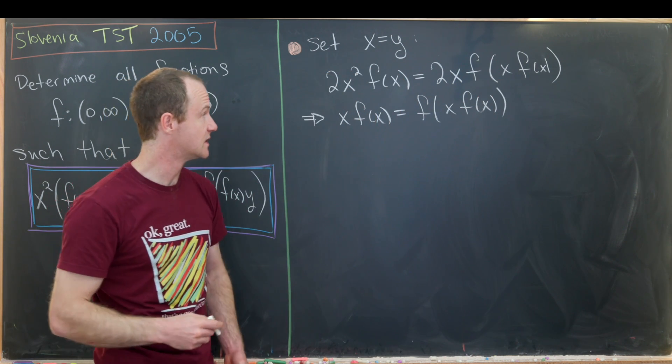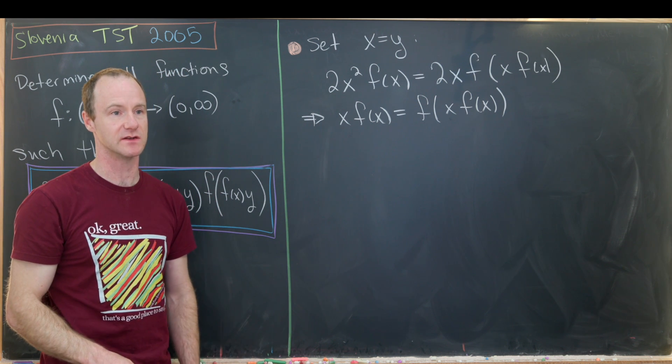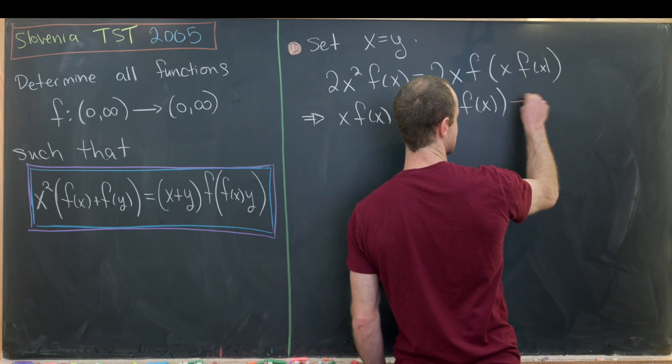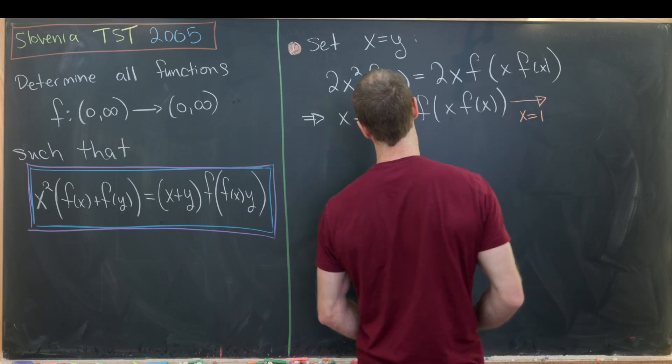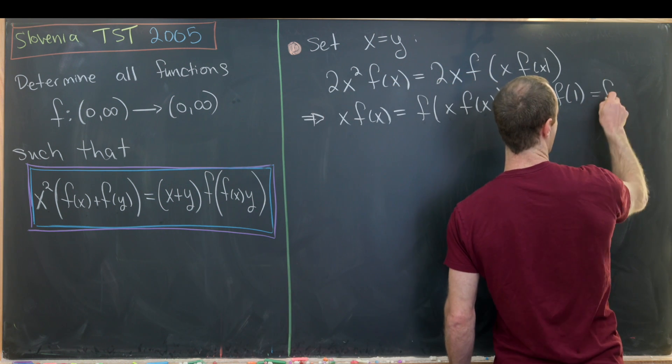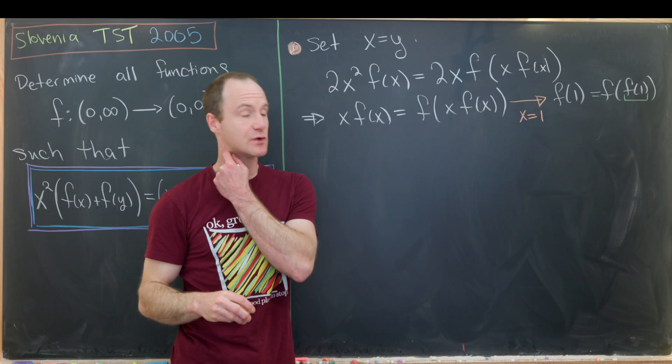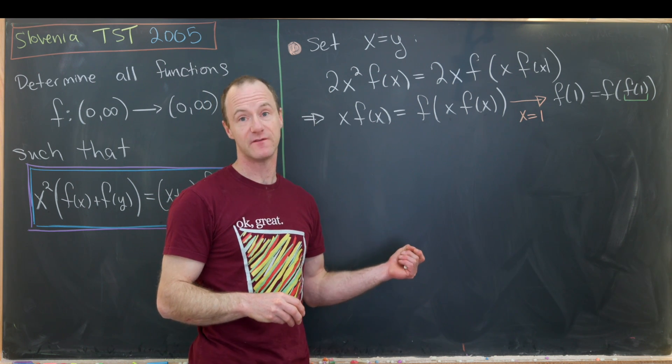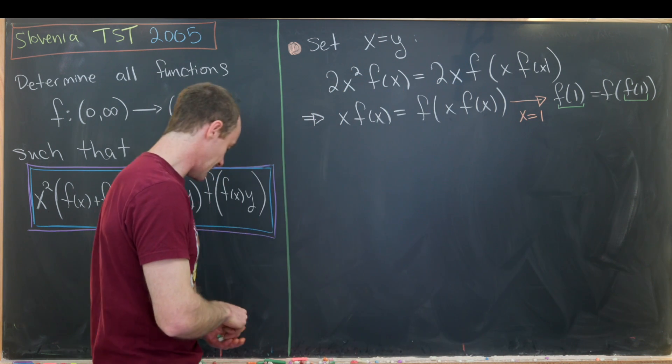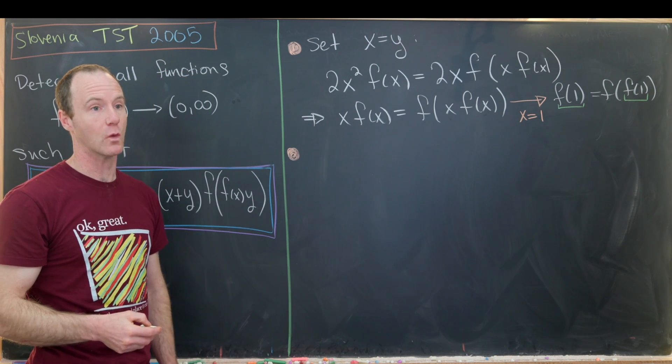So I think that's pretty interesting. It says that whenever we plug in something like xf(x) into the function, we get something like xf(x) out the other end. Now I'll take maybe a special value of x to see what happens. Maybe I'll take x equals one because that's the simplest. And that gives us f(1) on this side of the equation, and f(f(1)) on the other side. So that tells you that this value f(1) is called a fixed point. A fixed point is a point at which when you evaluate the function, the value stays the same. That gives us some motivation to define that to be a certain variable on its own so that we can work with it more cleanly.